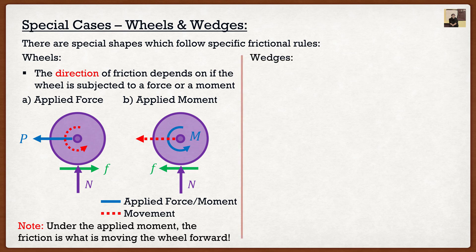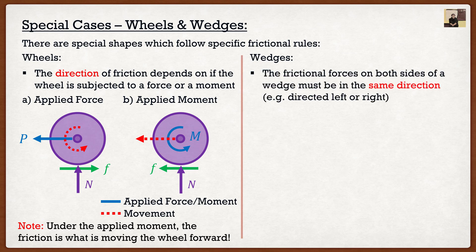Hopefully I cleared this up for wheels. The second one, which is of course the easier one, is going to be wedges. So the key to wedges is the frictional force on both sides must be in the same direction. Now I know you're looking at that. I don't know what that means. I don't know either. Let's look at an example.